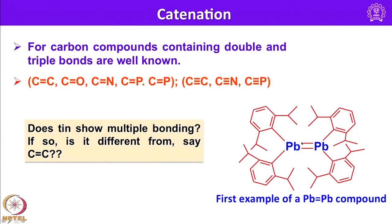The structure of the Pb-Pb compound is very interesting. The Pb-Pb distance is not actually a double bond but it has double bond character. It is not a conventional pi bond as seen in carbon-carbon; this will be explained further when discussing organometallic chemistry of main group compounds and multiply bonded main group elements. This dimeric lead compound is stabilized by very bulky 2,6-diisopropylphenyl groups — the Pb-Pb bond is kinetically stabilized.